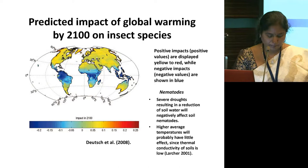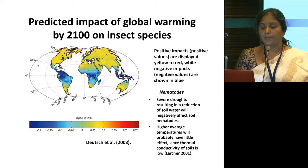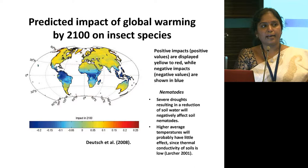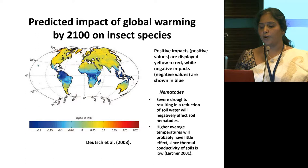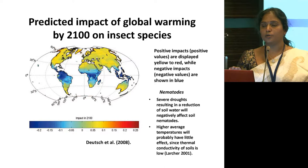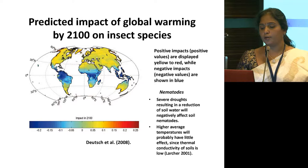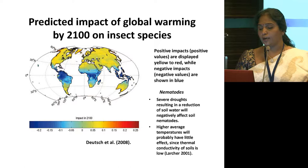This slide shows the predicted impact of global warming by 2100 on insect species. Positive values are indicated by yellow, orange and red colors, while negative values are shown in blue. In the equatorial region and lower latitudes, the predicted impact is negative because species are already experiencing conditions close to their optimum — any increase leads to negative impact. Insect pests will be more predominant in higher latitudes in both northern and southern hemispheres. For nematodes, severe droughts expected in the future will result in reduction of soil water, negatively affecting soil nematodes.